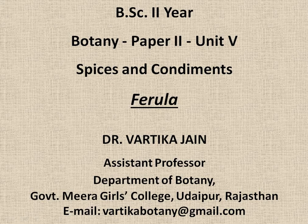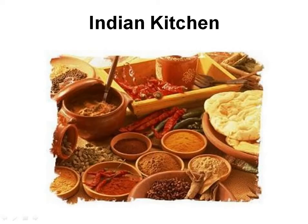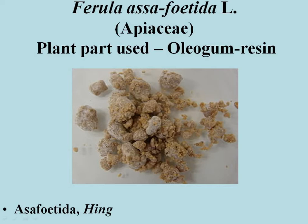Today we are going to discuss about Ferula among the spices and condiments as mentioned in the syllabus of Unit 5th from the Botany Paper 2nd of BSc 2nd year. We are studying Indian kitchen spices and condiments in Economic Botany, Unit 5th, in which we have studied 2 spices: 1st Coriandrum and 2nd Cuminum. And now in this video, we are going to study the 3rd spice and condiment from the family Apiaceae, which is Ferula asafoetida.